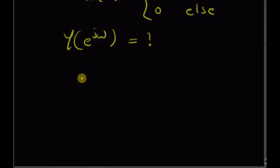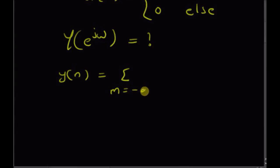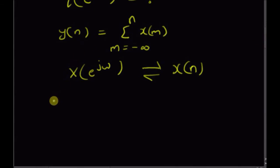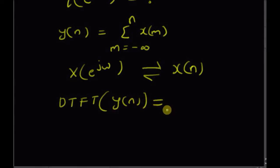For this problem we are going to use the accumulation property of DTFT, which is defined as follows. For a sequence y(n) defined as the summation from m = -∞ to n of x(m), and given that X(e^jω) is the DTFT of x(n), then the DTFT of the sum y(n) is equal to 1/(1 - e^(-jω)) multiplied by the original DTFT X(e^jω).